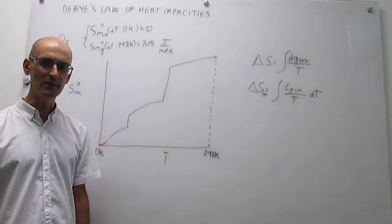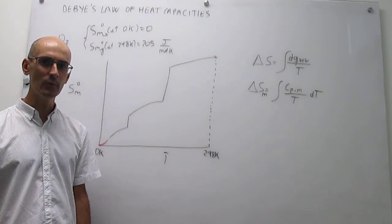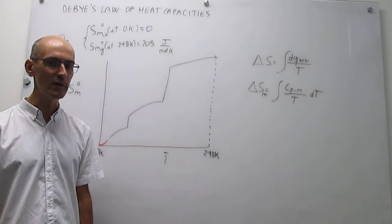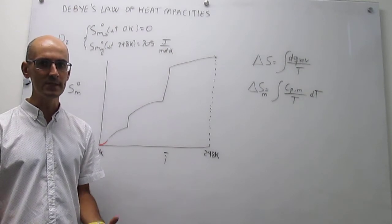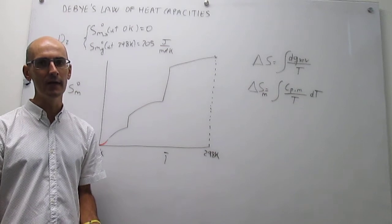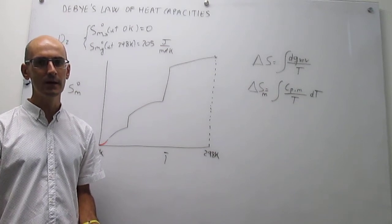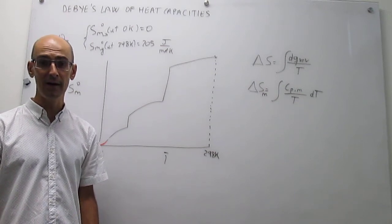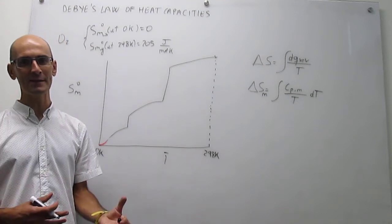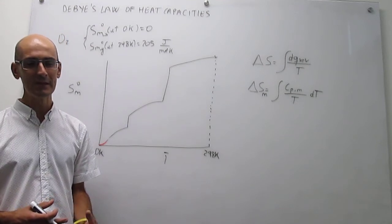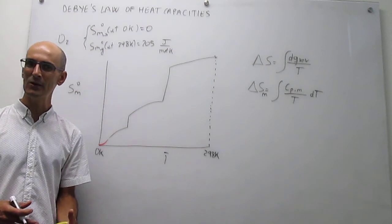So the question is, well, how did they do this? Well, the way that they did this is with models. Through the study of crystals and how they vibrate, Debye was able to come up with a law that actually tells you how the heat capacity of a crystal changes with temperature when the temperature is really low.